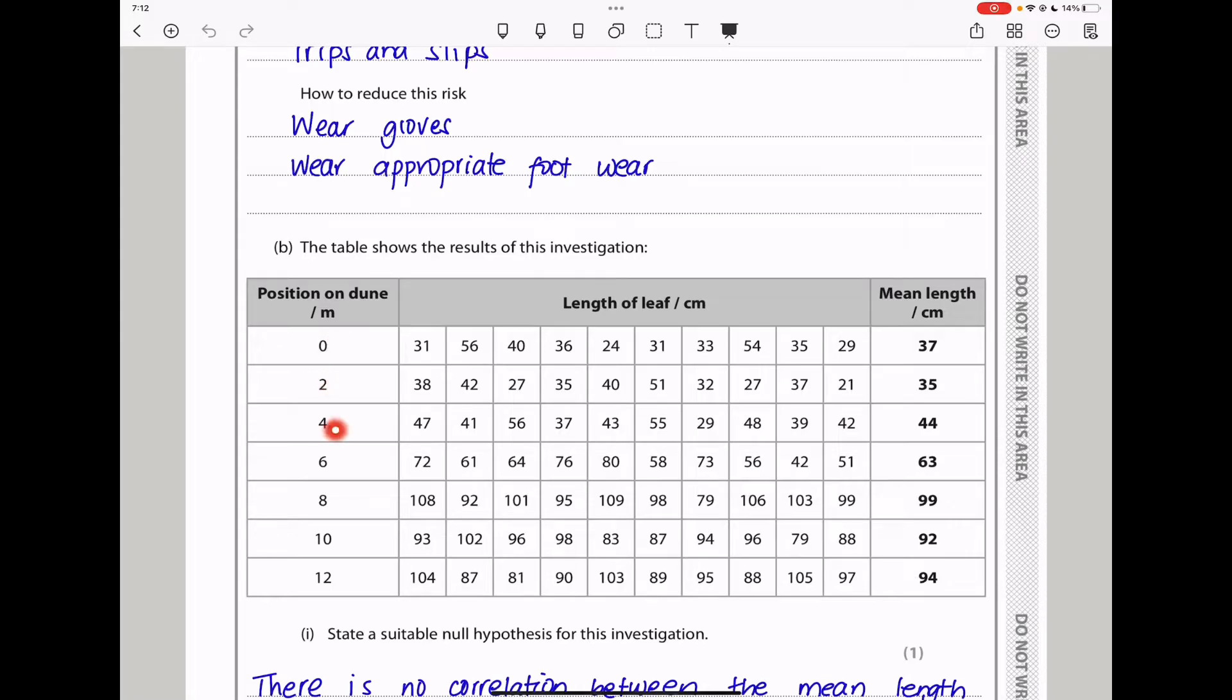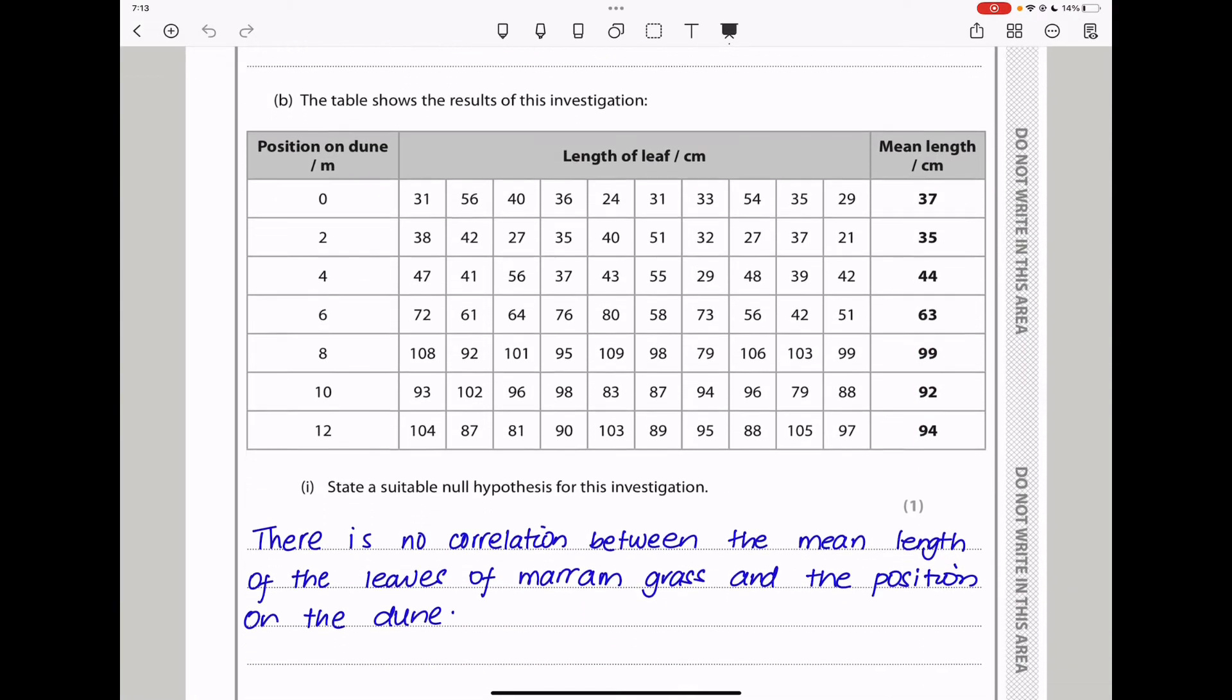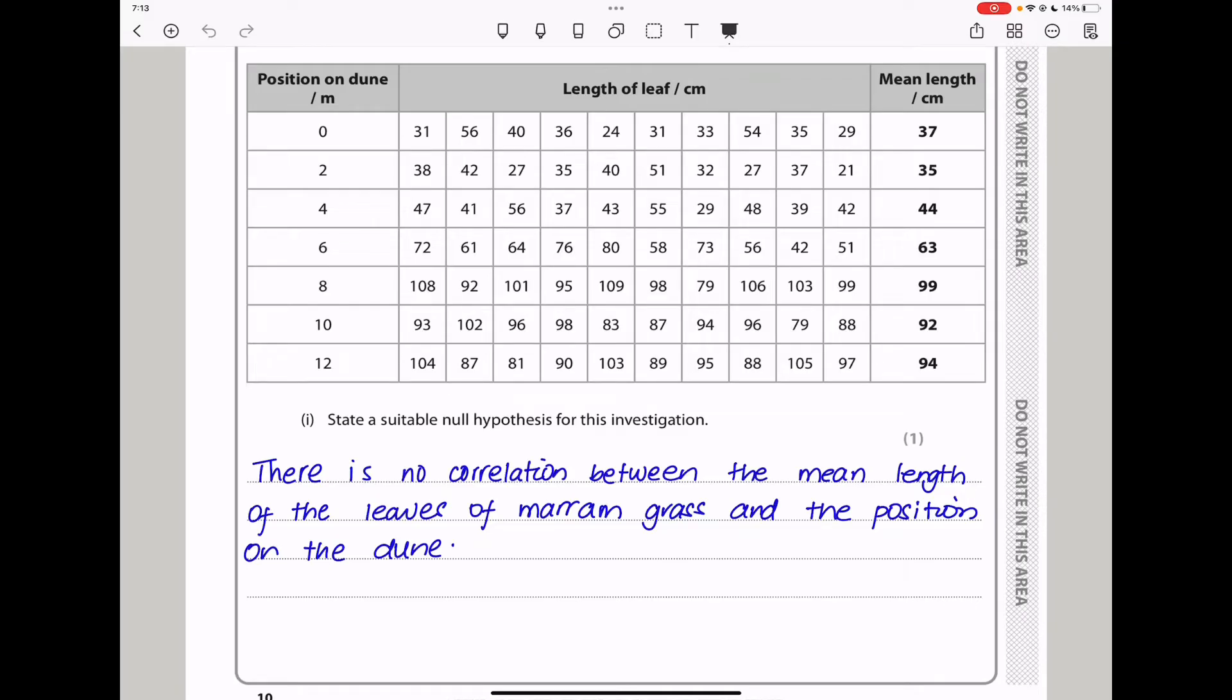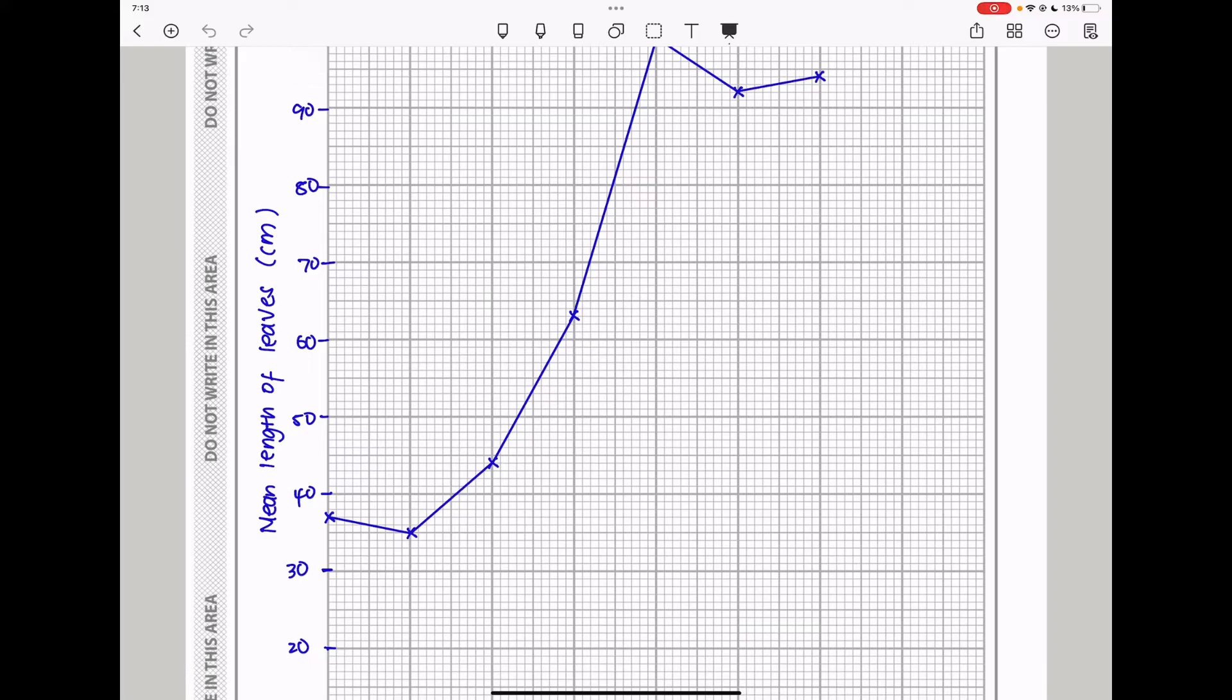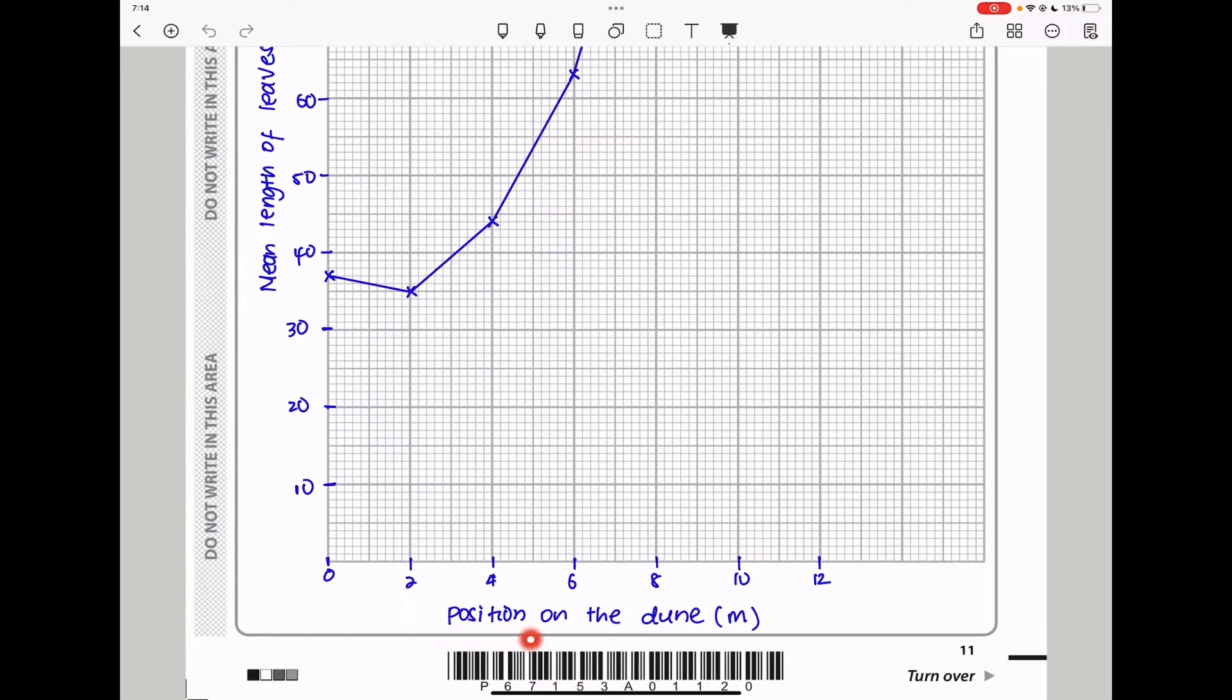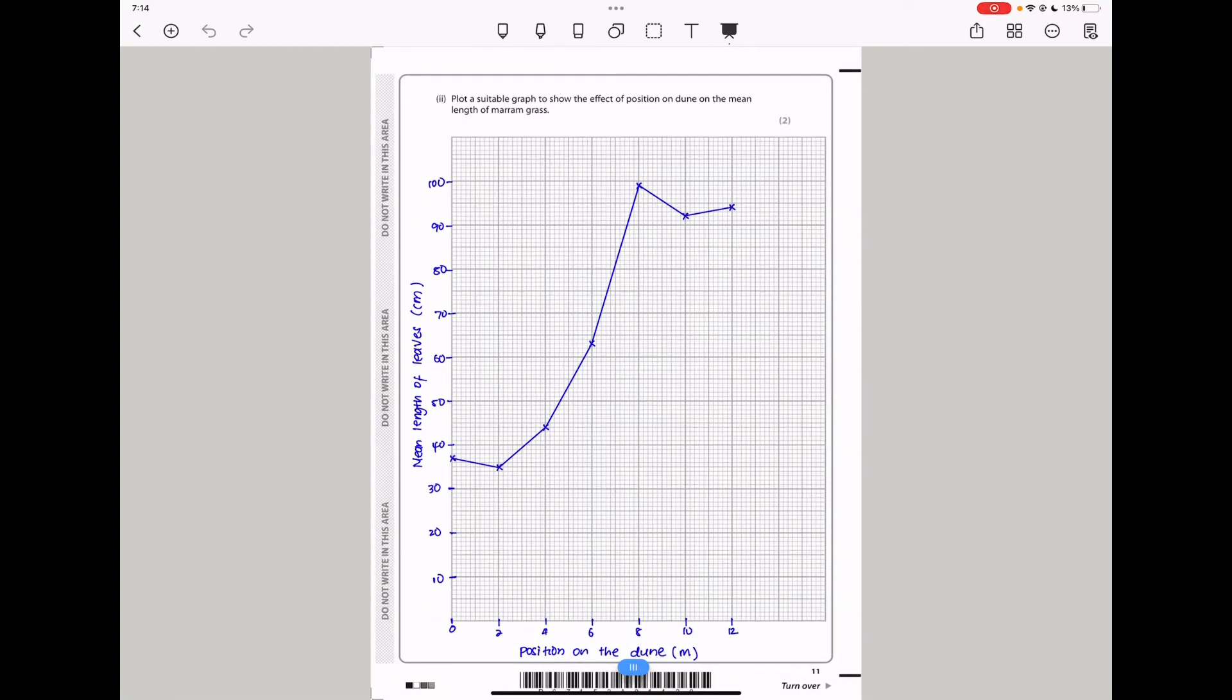Down here they say the table shows the results of this investigation. So we can see at the different locations along the dune, we can see the mean length is changing. We can see that we obtain the greatest mean length at 8 meters from the zero mark point. So the question says, state a suitable null hypothesis for this investigation. Because we are varying the position of the dune and measuring the mean length, this should be a correlation. So I say there is no correlation between the mean length of the leaves of Marram grass and the position on the dune. Here they say, plot a suitable graph to show the effect of position on the dune on the mean length of the Marram grass. I had to plot the mean length of leaves in 10 meters on the vertical axis. And then on the horizontal axis, I had to write the position on the dune in meters. I chose an appropriate scale that was easier to work with vertically as well as horizontally.